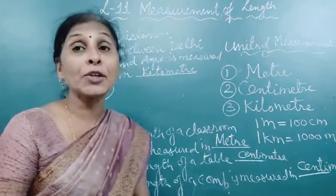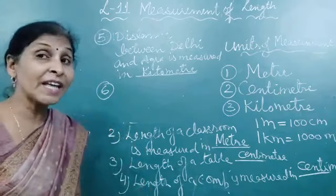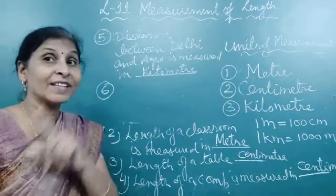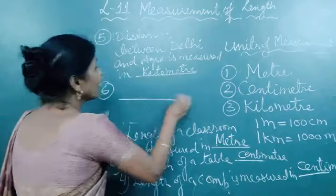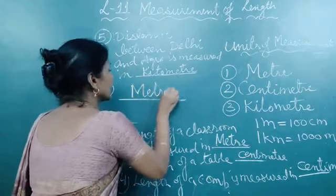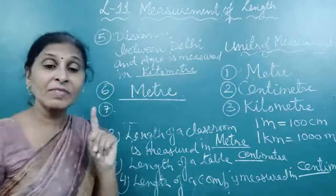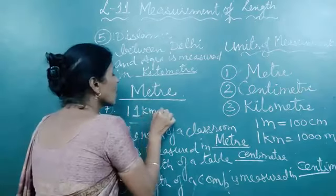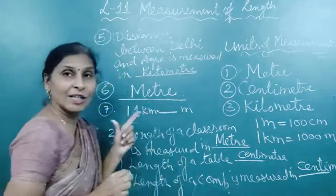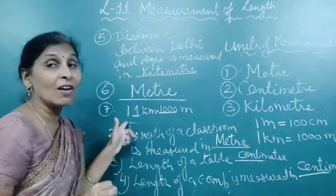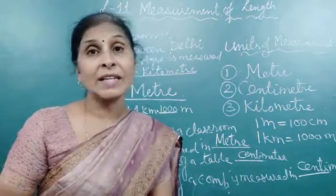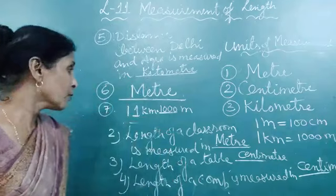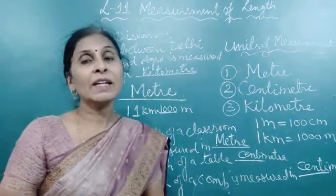Number 6 is the height of a tower. The height of a tower is measured in which unit — meter, centimeter, or kilometer? That is meter. Very good. Number 7: in one kilometer, how many meters? That is equals to 1000 meters. So one kilometer equals 1000 meters. So all of you do this work — activity 1 — in your classwork notebook.